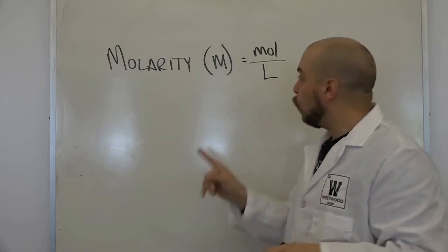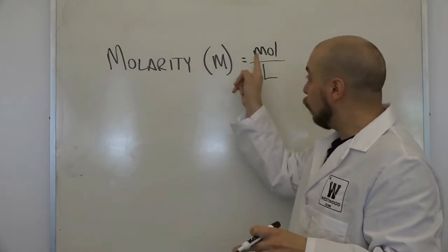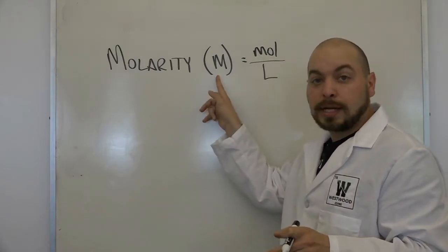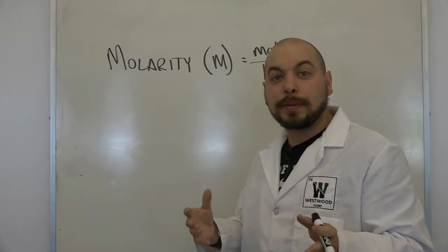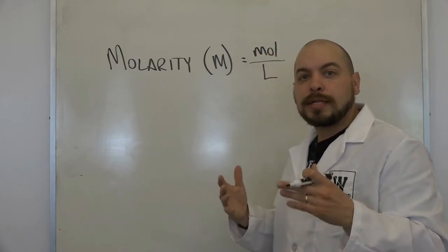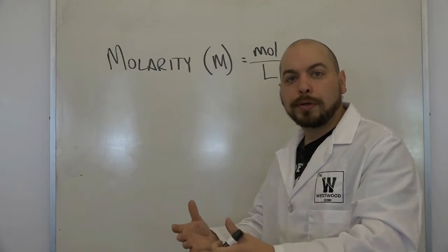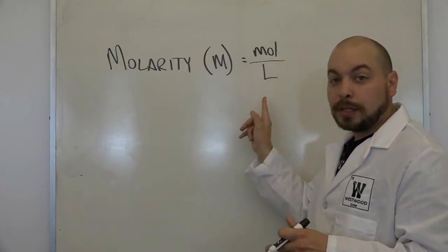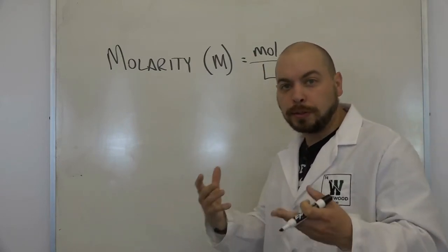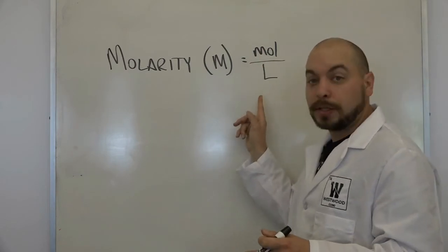So when we look at molarity, we have a unit now. We have moles per liter, or again like I said, oftentimes you're going to see this as simply a capital M. So if we say something is one molar, it has one mole in every liter. If something is six molar, it is six moles for every liter.